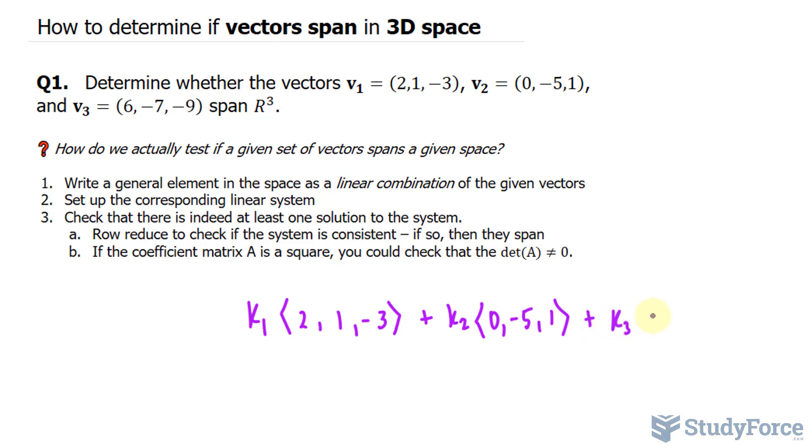and 1, plus the third scalar, we'll call k3, multiplied to 6, negative 7, and negative 9. We will now make this equal to an arbitrary vector, which has the components a, b, and c.